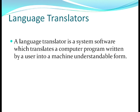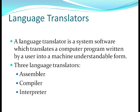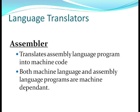Language translators translate programs written in high level language to machine-understandable binary form. We have three language translators: assembler, compiler, and interpreter. An assembler converts an assembly language program into machine code — into binary language of zeros and ones that a computer understands. Both machine language and assembly language programs are machine dependent.